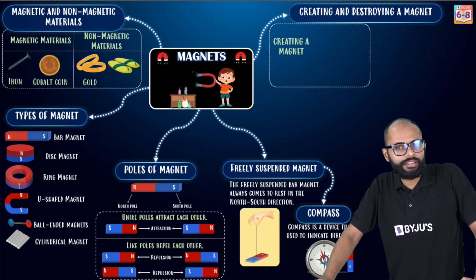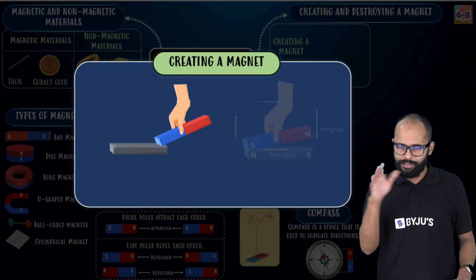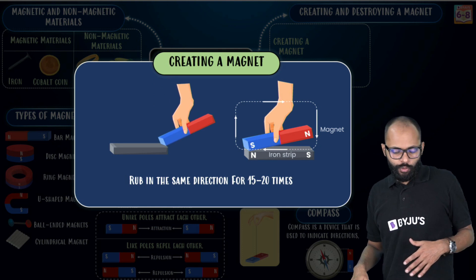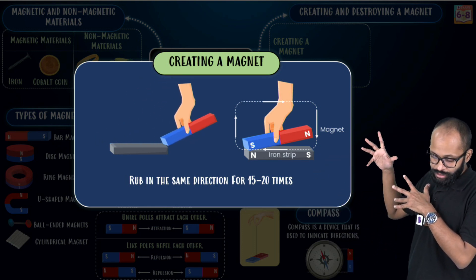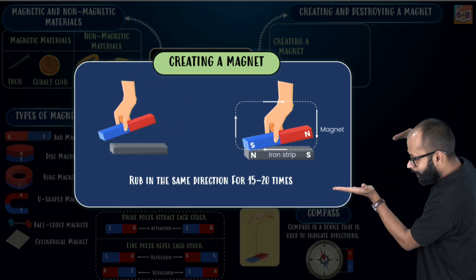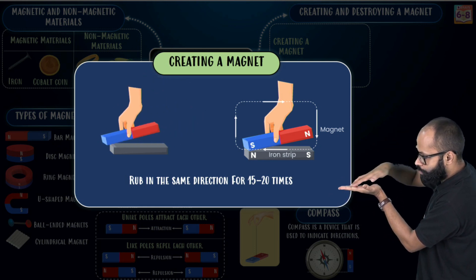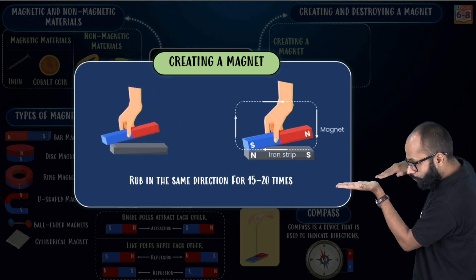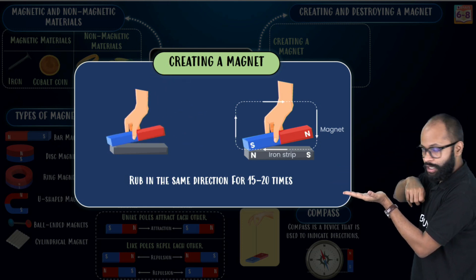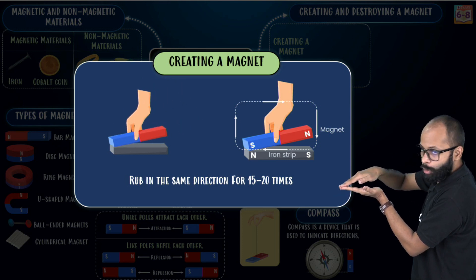Now, can we create a magnet? What? Can we create a magnet? Absolutely. You can create a magnet. The process is simple. It's just a little effort taking but it's simple. What you have to do is rub in the same direction 15 to 20 times. You take a surface, right? You take a surface. Then what do you do? You rub the magnet. One, two, three, four, five.